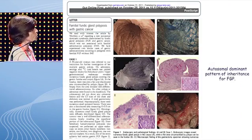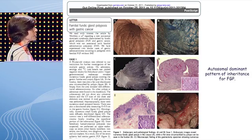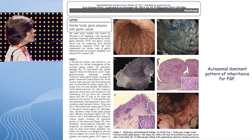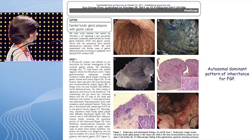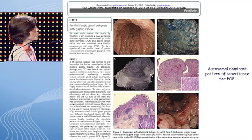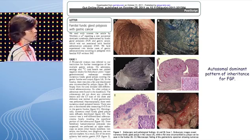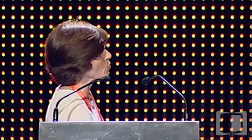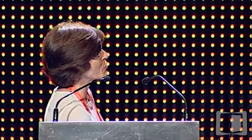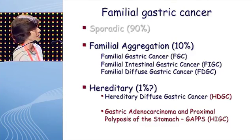After our publication, a couple of months later a paper from Japan described two families with exactly the same features — fundic gland polyps with dysplasia and development of gastric cancer. We approached the Japanese authors to join efforts for gene identification, but they preferred to proceed separately, presumably hoping to identify the gene before our group.